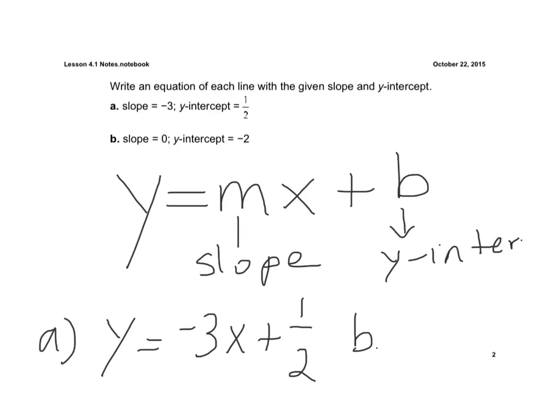For letter b, it says the slope is 0. So we have y equals slope of 0 times x, and then the y-intercept of a negative 2, so minus 2. Well, 0 times x is just 0, so this actually is just y equals a negative 2.